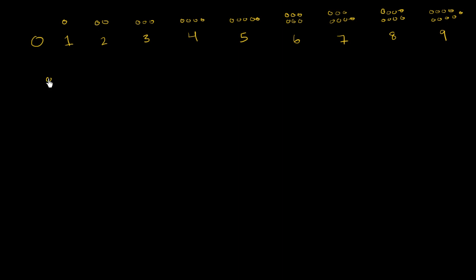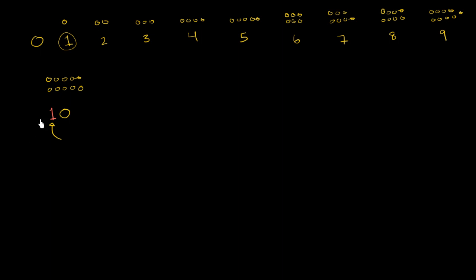And then if I have 10 things — 1, 2, 3, 4, 5, 6, 7, 8, 9, 10 — what symbol do I use? I've already used up my 10 digits. We only have 10 digits in a base 10 system. So we start reusing them. What we do is introduce this idea of number places. You say that I have one 10 and zero ones.